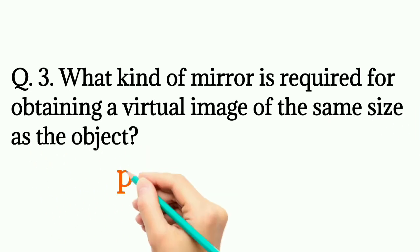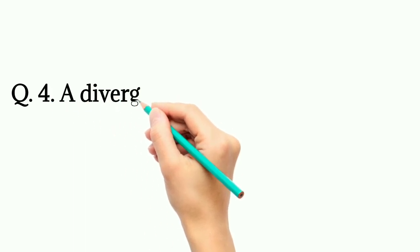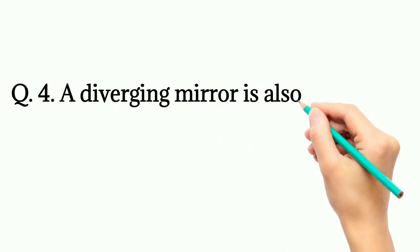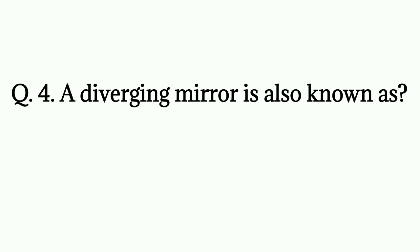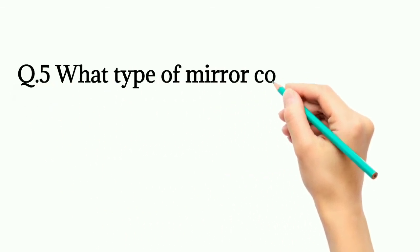What kind of mirror is required for obtaining a virtual image of the same size as the object? Plane mirror. A diverging mirror is also known as a convex mirror.